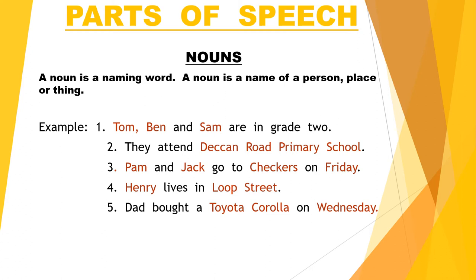Sentence 4: Henry lives in Loop Street. Henry is the name of a person and Loop Street is the name of a street.